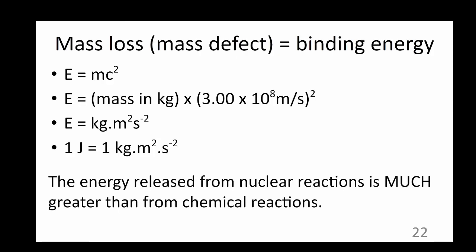How does the loss of mass get converted into energy? Well, the mass that is lost, also called the mass defect, is converted into binding energy. Every kilogram of mass releases an entire joule of energy. Through simple unit conversion, we can see how this relates to the E equals MC squared equation. The energy released in this process is much greater than the amount of energy released from chemical reactions.